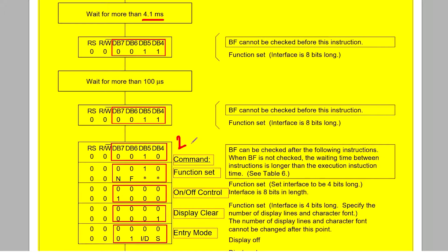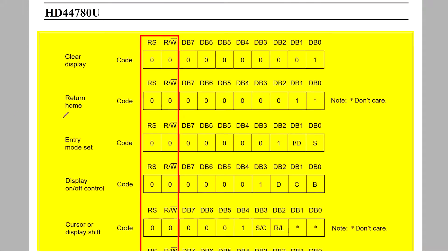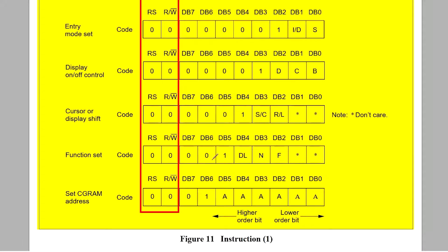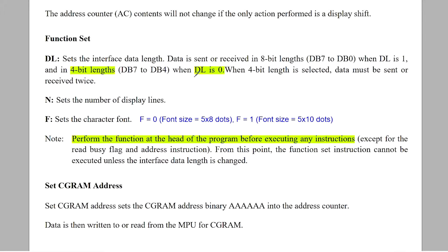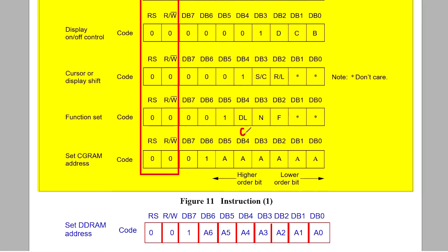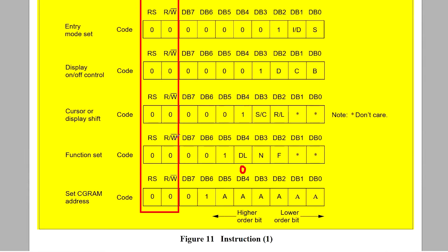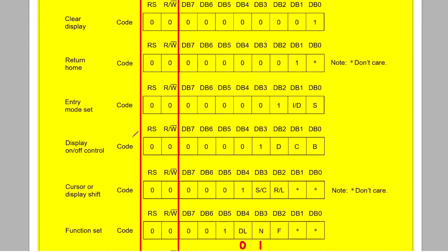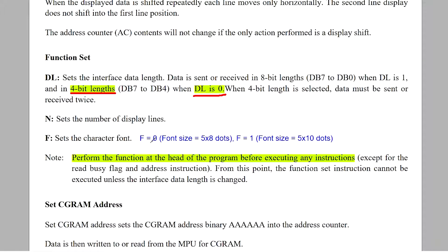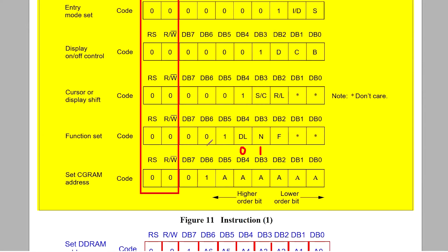In the following sequence we need to send 4 commands. First, the display function set. In this command, bit DB5 will be 1. For 4-bit mode, DL equals 0. N is the number of lines in the display — as we are using a two-line display, N equals 1. F stands for font: F equals 0 denotes 5×8 dot font, and F equals 1 selects 5×10 dot font. Generally we prefer the 5×8 dot font, so F equals 0.